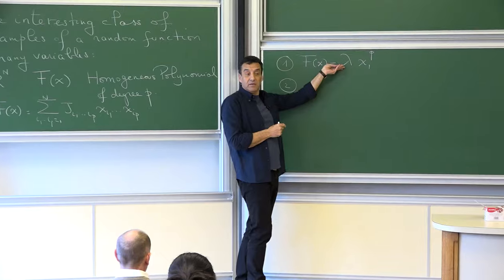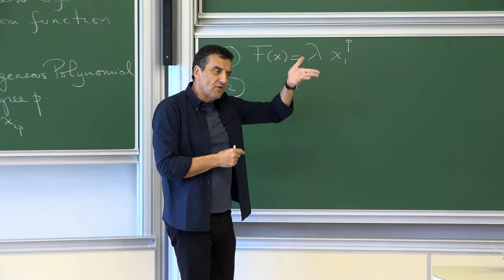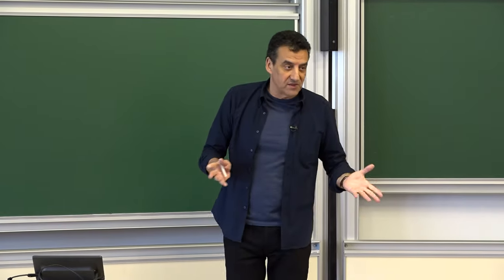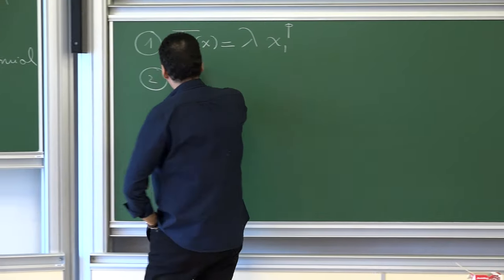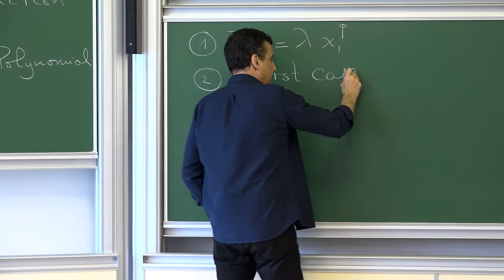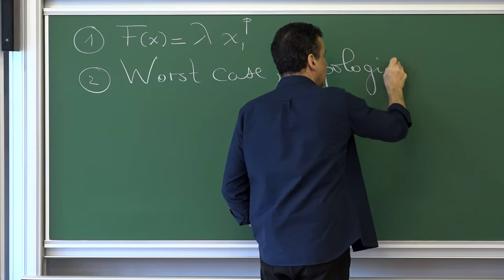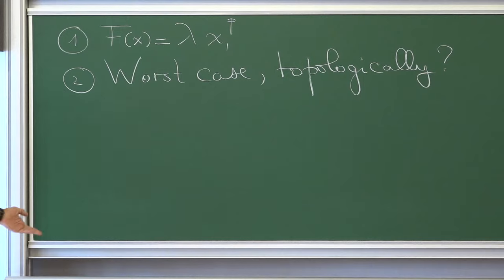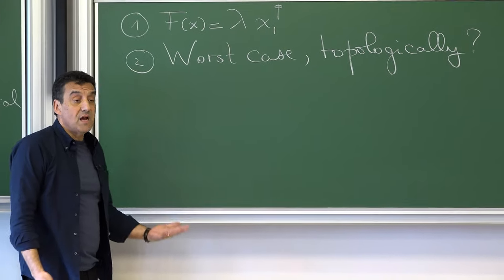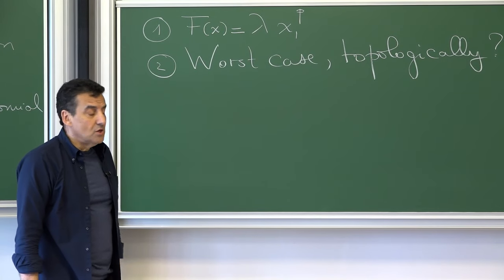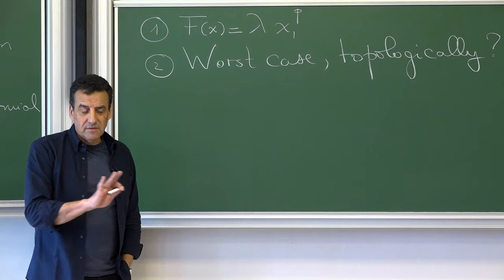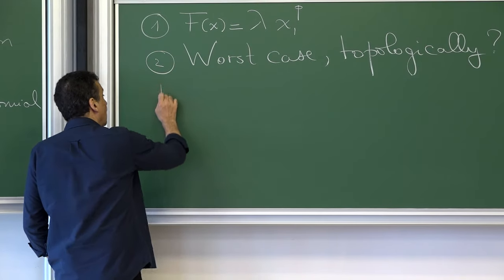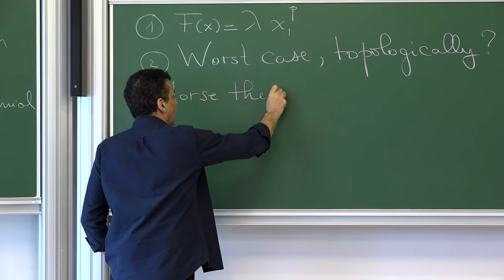Now let me ask the other question — the question for people who like complicated things. What is the worst case possible, from the topological point of view? Before going there, I should describe a bit what I mean by something topologically complex. So, since this is a mathematical audience, you all know Morse theory. Let me just remind you in a couple of words what Morse theory tells you.